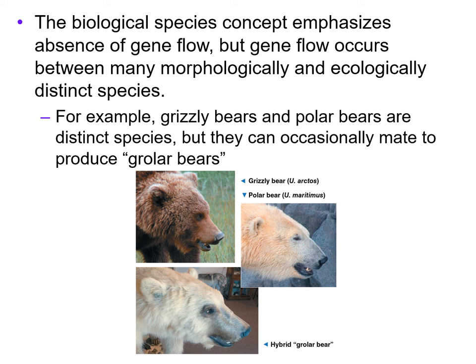The biological species concept emphasizes the absence of gene flow, but gene flow occurs between many morphologically and ecologically distinct species. For example, the grizzly bear and the polar bear are morphologically distinct species, but they can occasionally mate to produce a grolar bear.